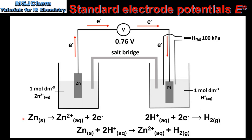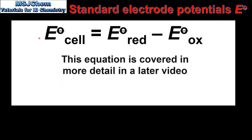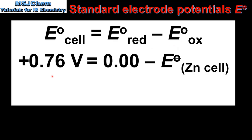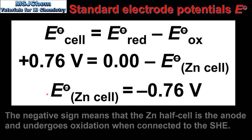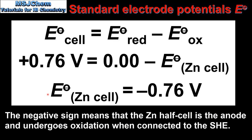Next we'll look at how to calculate the standard electrode potential of the zinc half cell. The cell potential is equal to the standard electrode potential of the half cell that undergoes reduction minus the standard electrode potential of the half cell that undergoes oxidation. In our example the cell potential was 0.76 volts, the SHE — assigned an electrode potential of 0 volts — underwent reduction, and the zinc half cell underwent oxidation. From this we can calculate the standard electrode potential of the zinc half cell as negative 0.76 volts.